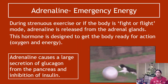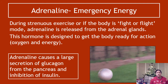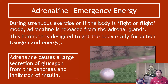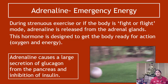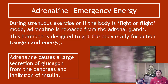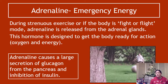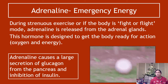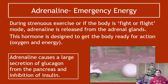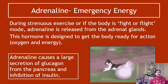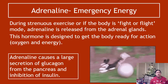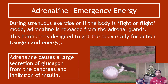During strenuous exercise or when the body is in fight-or-flight mode, adrenaline is released from the adrenal glands. This hormone is designed to get the body ready for action — you need oxygen and energy. Adrenaline causes a large secretion of glucagon from the pancreas and inhibition of insulin. This is why diabetics have to be careful when exercising, as that large secretion of glucagon and high amount of blood glucose released back into the blood can cause issues. Athletes with diabetes tend to test their blood glucose frequently. Adrenaline increases glucagon release, increasing blood glucose, and also inhibits insulin.